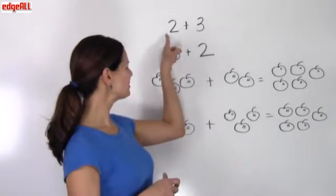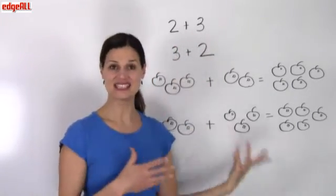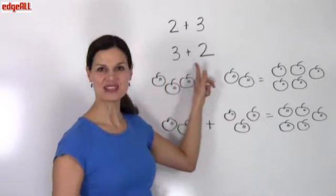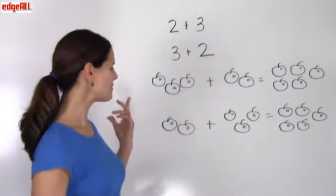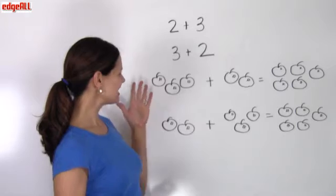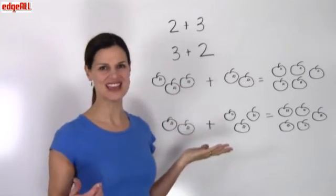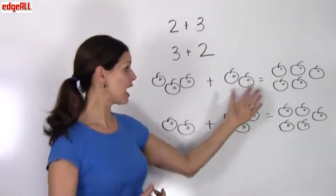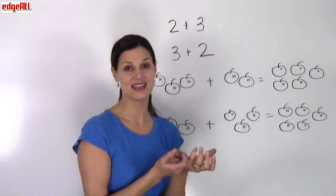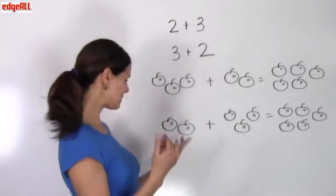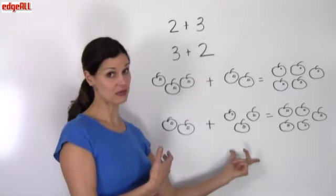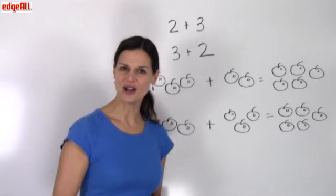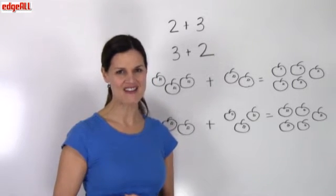So, 2 plus 3 has the same sum, the same result, the same answer as 3 plus 2. If you think about this addition problem visually, you can see that this property becomes obvious. If I start out with 3 apples and I add 2, I end up with 5 apples. And exactly the same, if I start out with 2 apples and I add 3, I still end up with 5 apples. This is called the commutative property of addition.